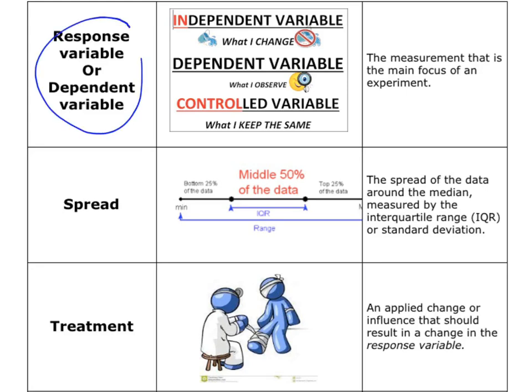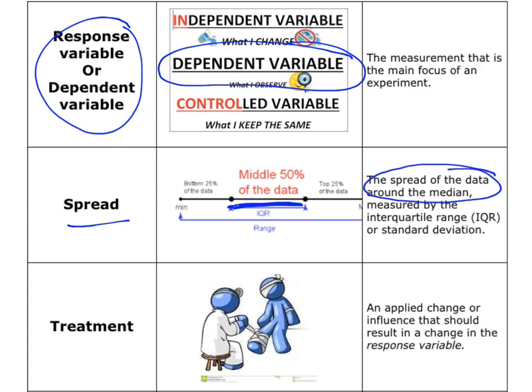The response variable, or dependent variable, is the thing that you are observing or measuring. Spread — that's looking at how spread out the data is. At level 2, we're interested in the interquartile range. At level 3, we still use the interquartile range and might go into standard deviation. The key idea is we're looking at the spread of the data around the middle.